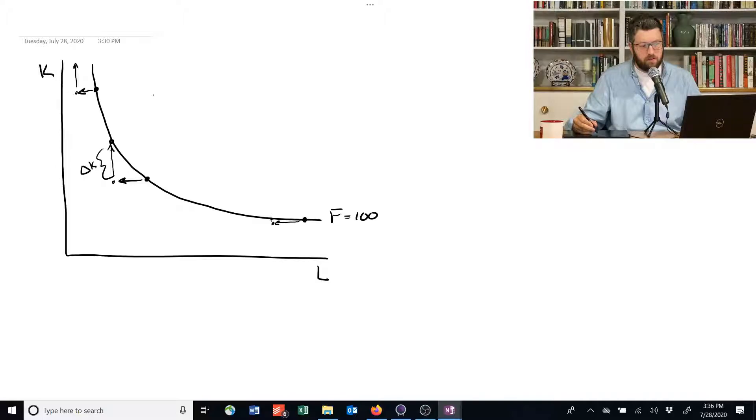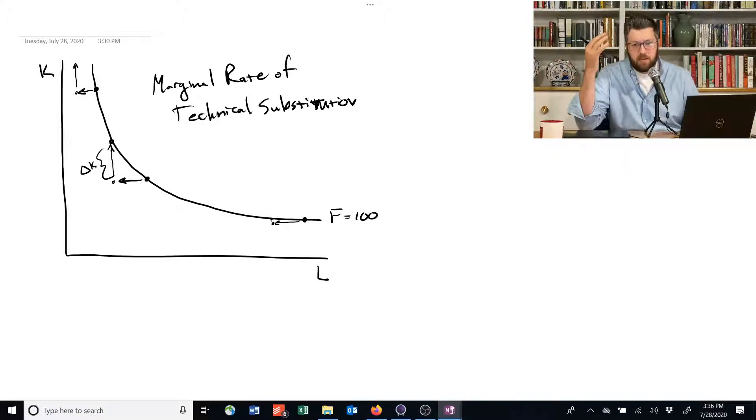And what we do is we can formalize this concept in something called the marginal rate of technical substitution. The marginal rate of technical substitution is basically a measure of the trade-off of inputs to keep your outputs the same. If you lose one worker, how much extra capital do you need to produce the same amount? Stay on the same isoquant.